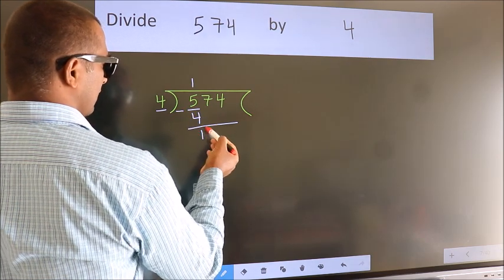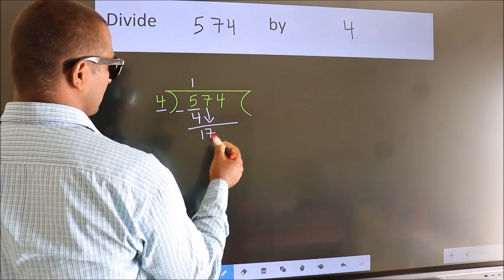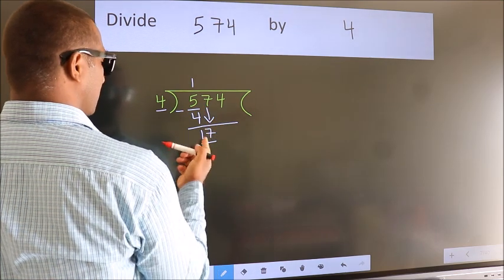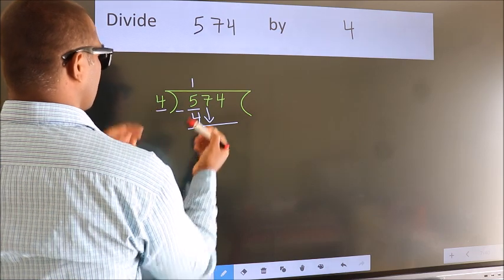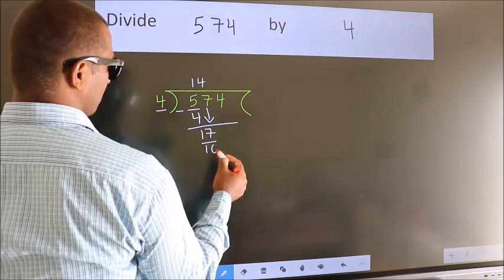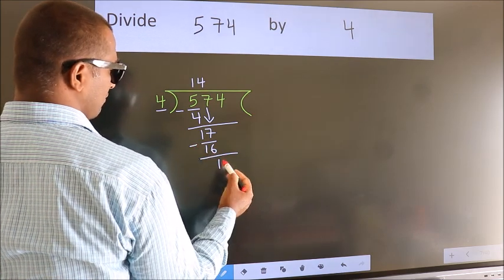After this, bring down the beside number. So 7 down. So 17. A number close to 17 in the 4 table is 4 fours 16. Now we subtract. We get 1.